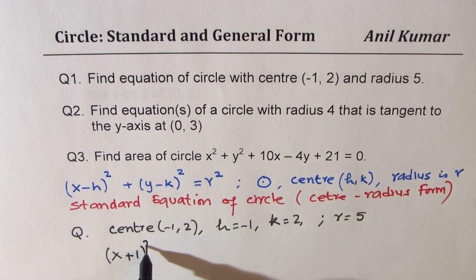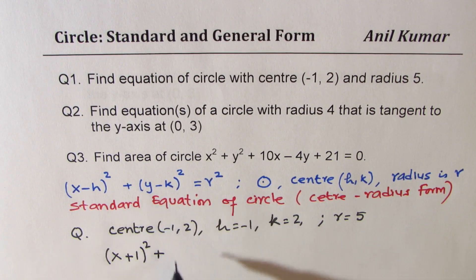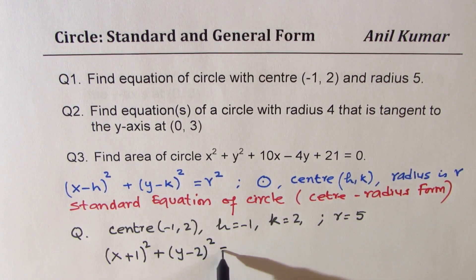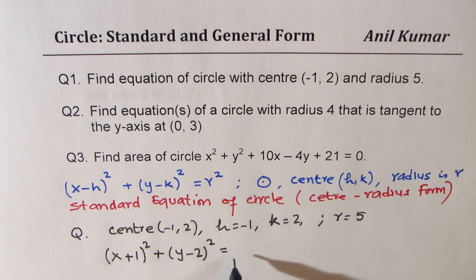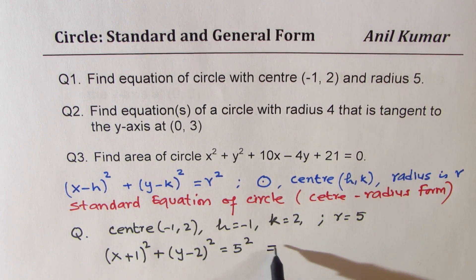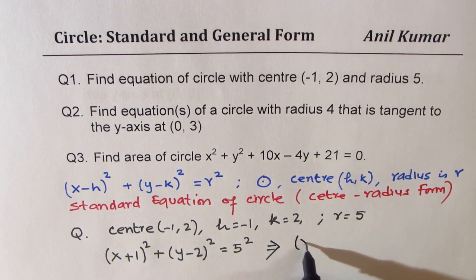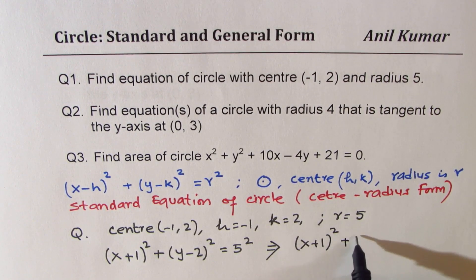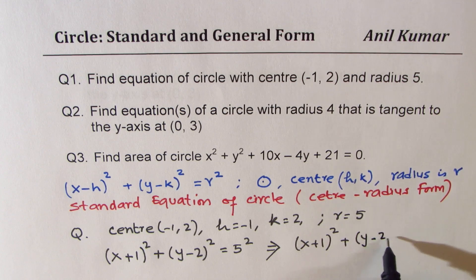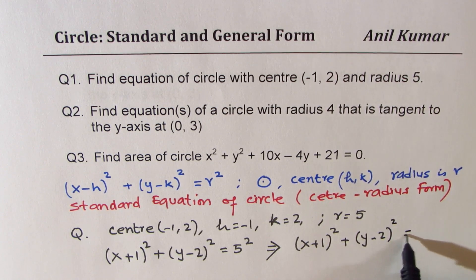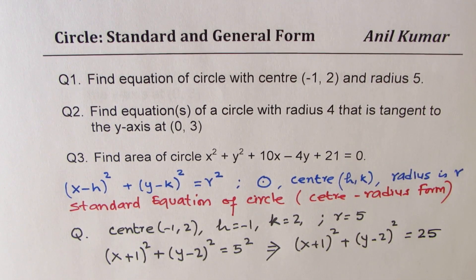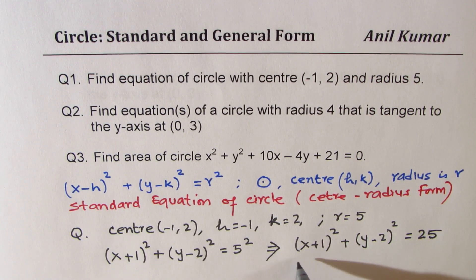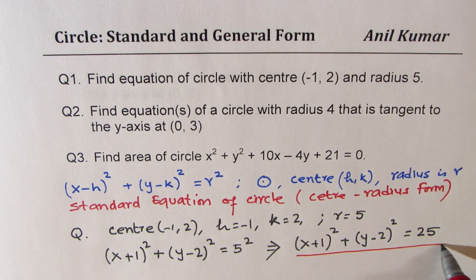We are also given the radius as 5, so we substitute into the equation. We get (x - (-1))² + (y - 2)² = 5², which simplifies to (x + 1)² + (y - 2)² = 25. That is the solution to the first question — the concept is very straightforward.